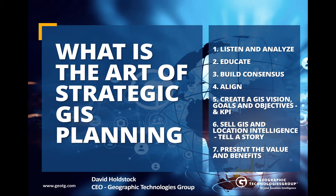So what is the art of strategic GIS planning in local government? The art, number one, is to listen and analyze. Like a goal without a plan is just a wish — so you can have as many wishes as you want, but you've got to plan it. You've got to educate. Aristotle said, 'Educate the mind without educating the heart is no education at all.' So there's more to this. You've got to listen, you've got to analyze.